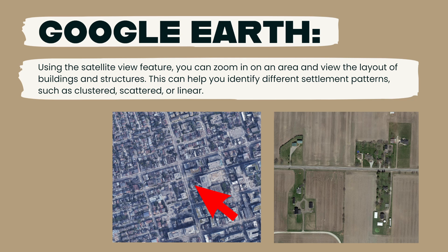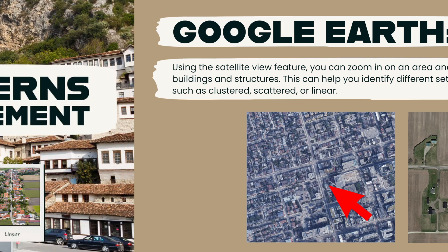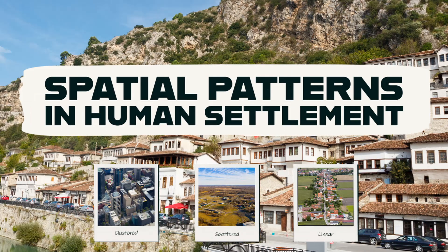For example, if you see a compact and dense arrangement of buildings and structures, it is likely that the area has a clustered settlement pattern. Good luck.